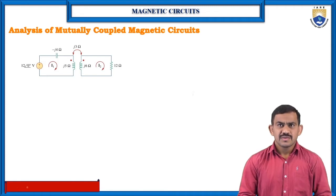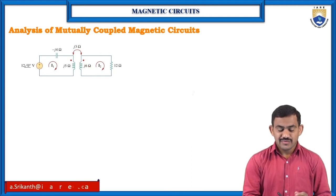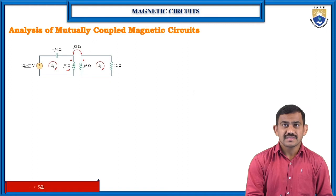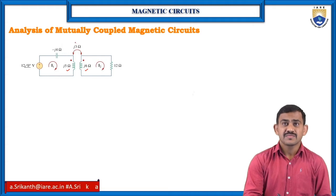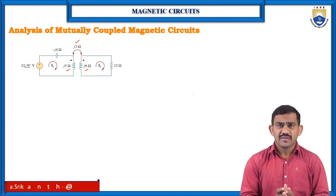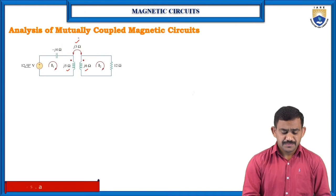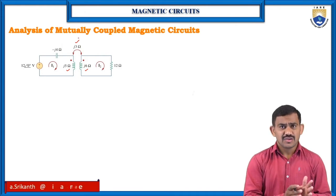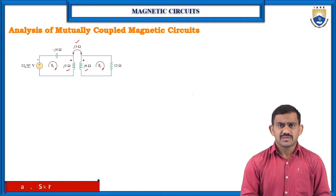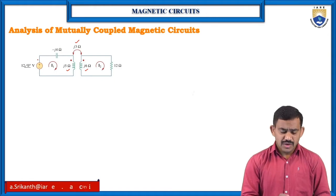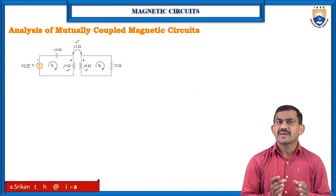Here we have a small circuit. We have 5J as well as J6 — two inductors connected mutually with 3J. For this circuit we need to find out the loop currents, branch currents, or voltage drops. We need to write the equations for two loops using mesh analysis.